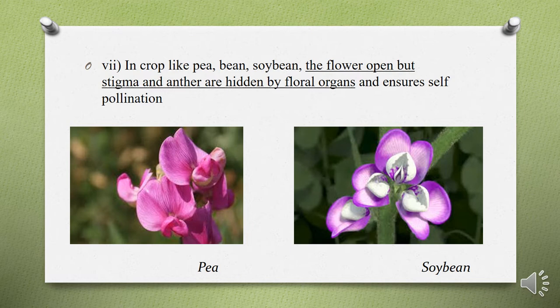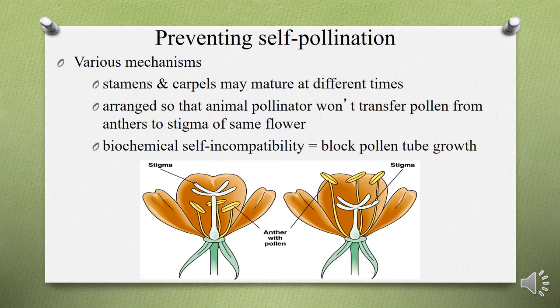These are the seven mechanisms or conditions that facilitate the process of self-pollination. There are also various mechanisms that prevent self-pollination, meaning in those cases there are higher chances of cross-pollination.